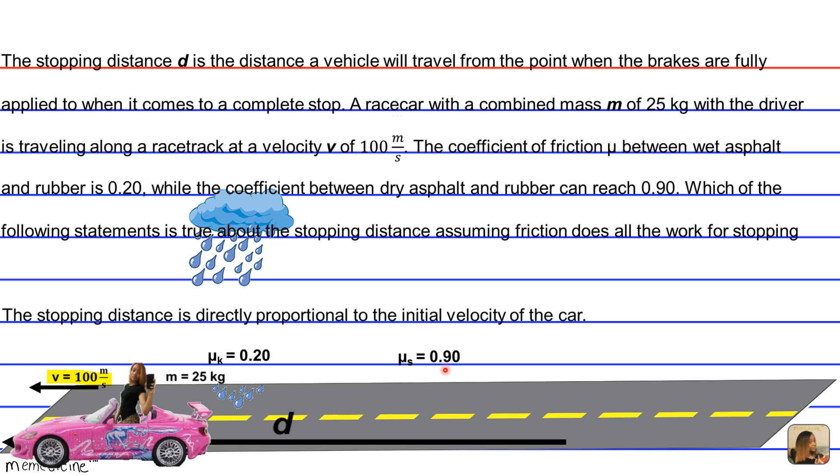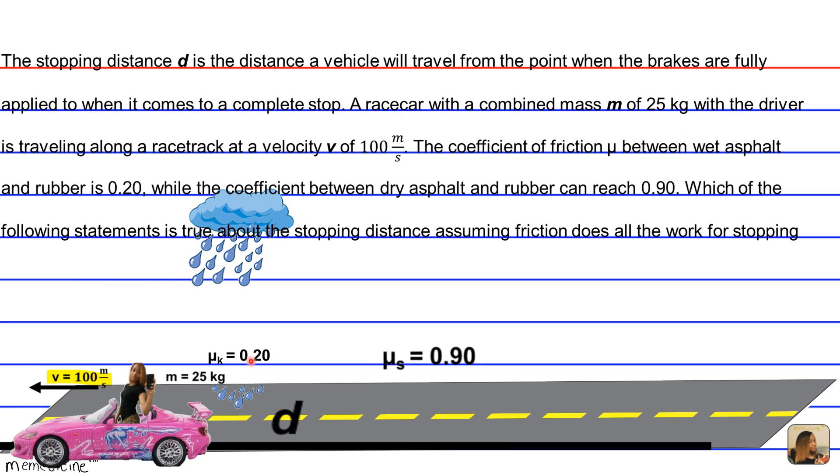Would it be A, the stopping distance is directly proportional to the initial velocity of a car? Would it be B, the greater the coefficient of kinetic friction, the greater the stopping distance?